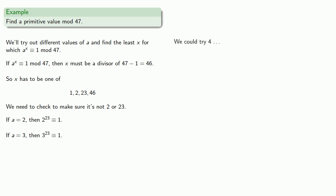We could try 4, but since 4 is equal to 2 squared, we'd have 4 to the 23rd. Well that's really 2 squared to the 23rd, or switching around our exponents, 2 to the 23rd squared. But we already know 2 to the 23rd is congruent to 1, so we know that 4 to the 23rd will also be congruent to 1, so we won't bother with 4.